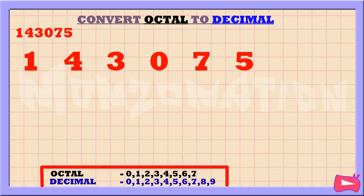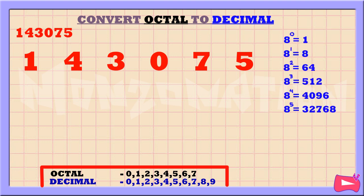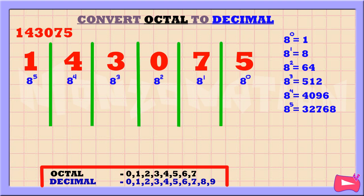The octal number system is based on the powers of 8. The first step is to write down the powers of 8 from right to left. Then, let's write down the final value of each power of 8. After that, let's multiply each octal digit by its corresponding power of 8.